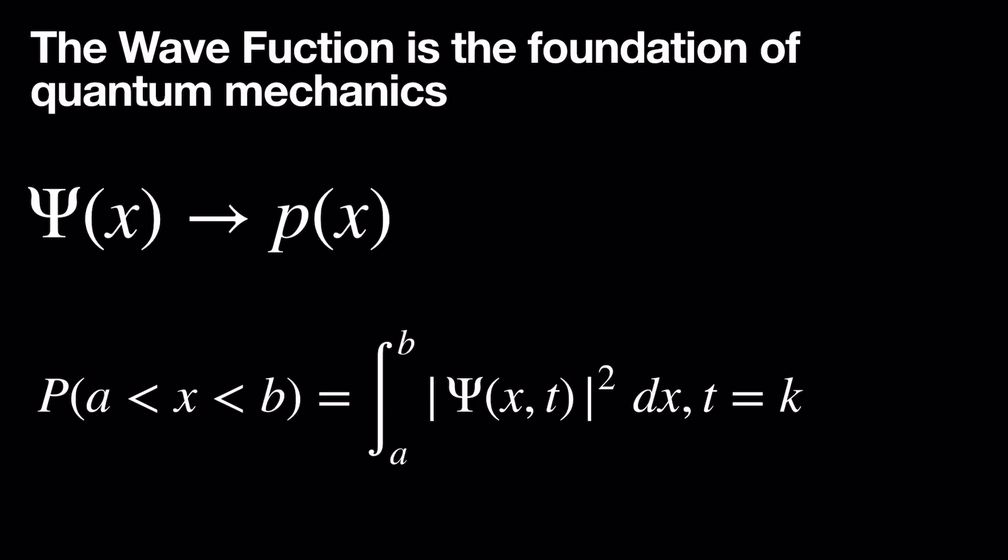So to summarize, the most fundamental idea is the wave function is the foundation of all of quantum mechanics. But according to the Copenhagen interpretation, the wave function can be converted into a probability distribution. Then, by finding the area under that curve, you found the probability of the particle being in that region of space.